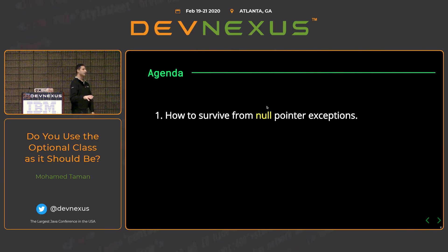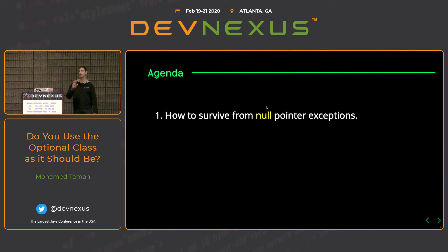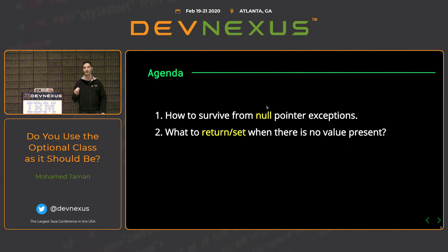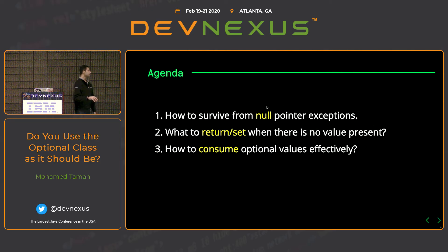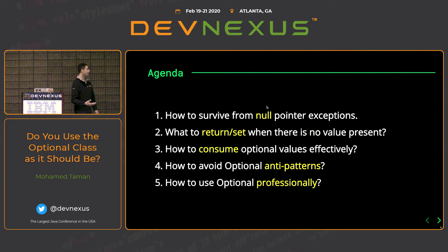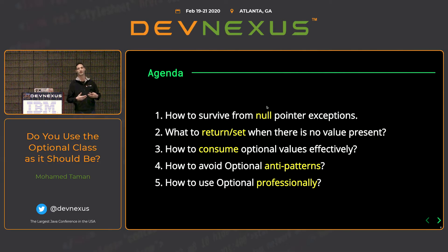Our agenda covers: how to survive NullPointerExceptions using Optional, because sometimes using Optional incorrectly still throws exceptions. We'll see how to set and return values when no value is present, which methods to use effectively, how to consume Optional values effectively, how to avoid Optional anti-patterns such as overuse, and how to chain Optional with the Stream API.